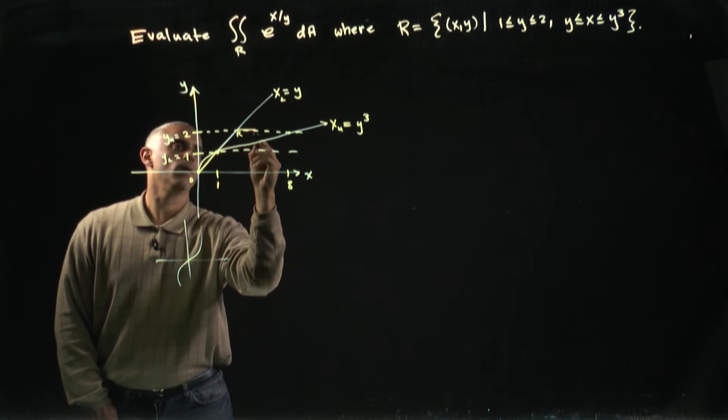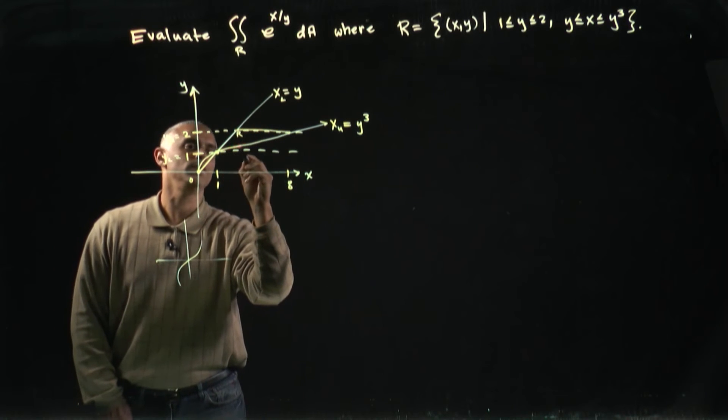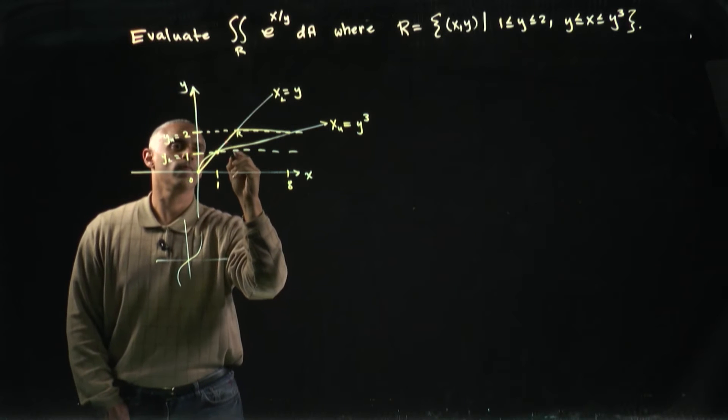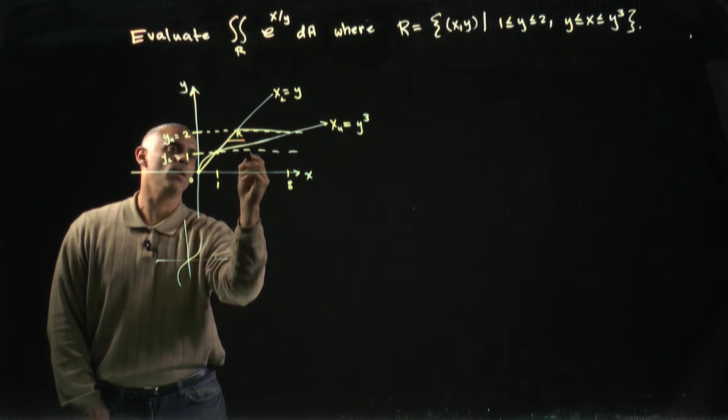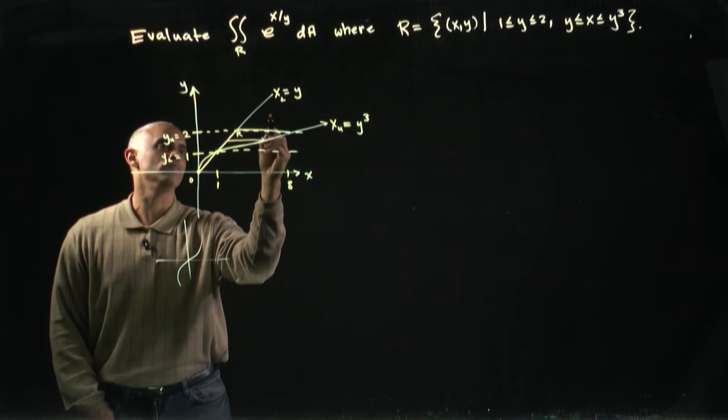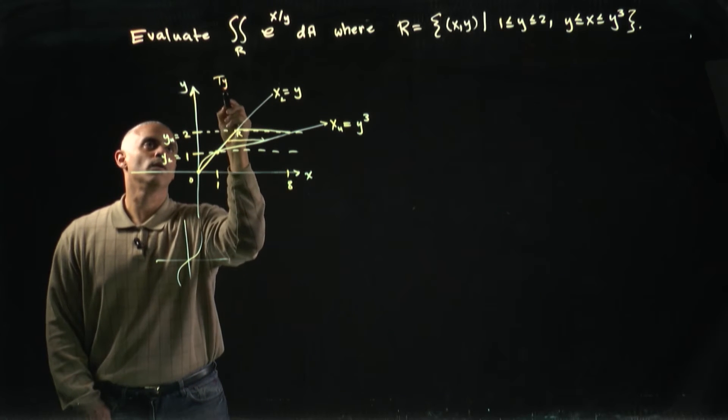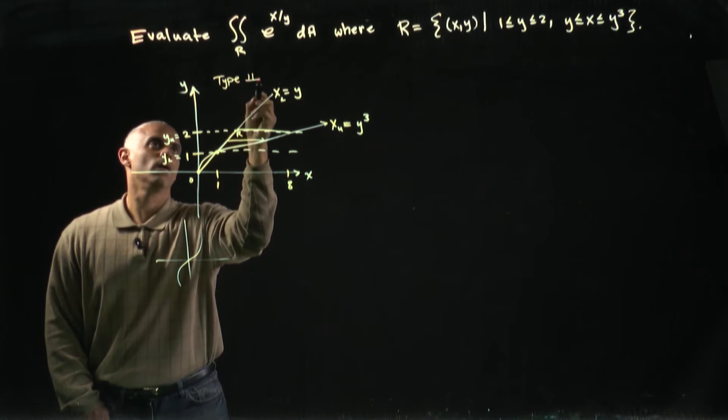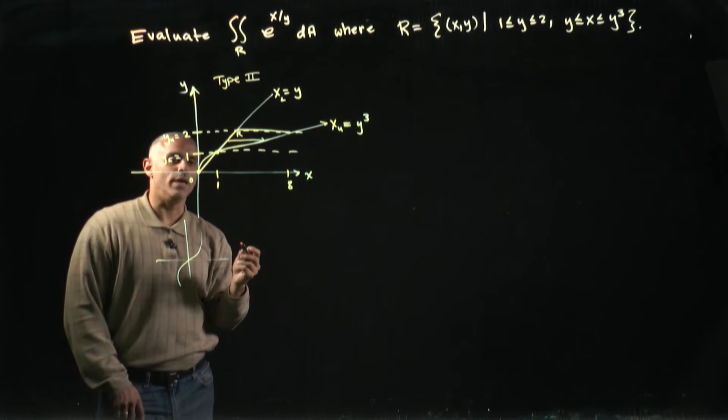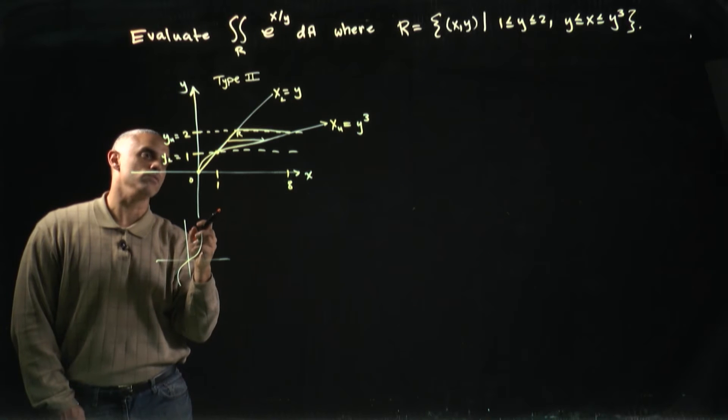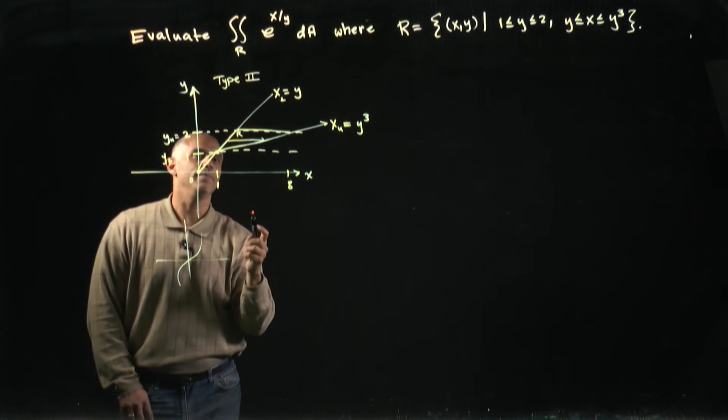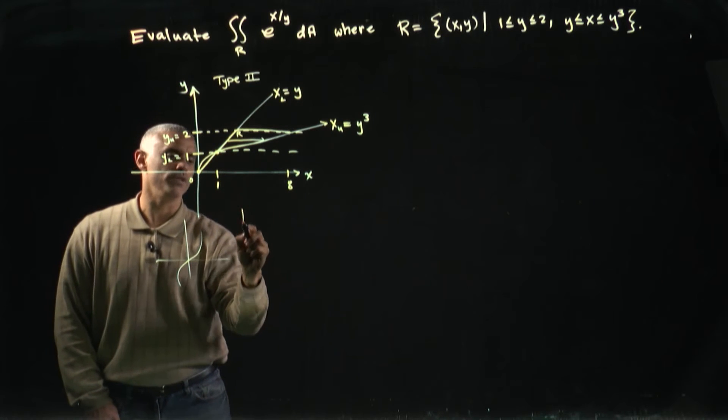All right, and approximating arrow going from our lower bounding x to our upper bounding x, seen as a type two region, should go like this, where we go from a lower bound of y equals one to an upper bound of y equals two. And with that, we should be able to write out this region R.